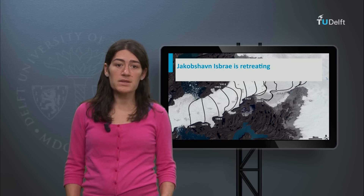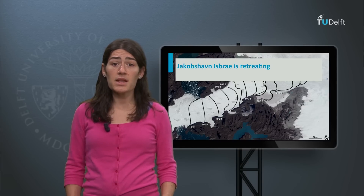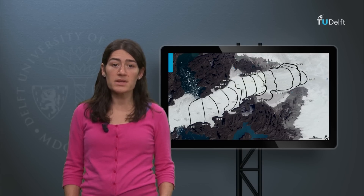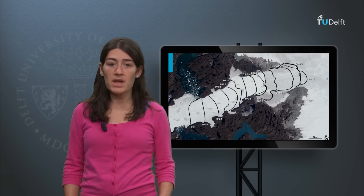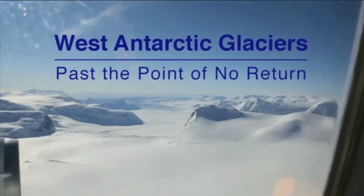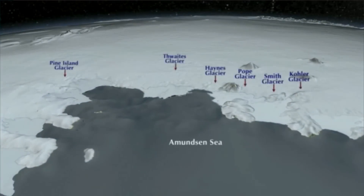Observational evidence and modelling studies indicate that increased ice discharge to the ocean will continue into the future. As an example, the fastest glacier in Greenland — Jakobshavn Isbræ — has been receding in recent years with high rates of iceberg production. The glaciers terminating in the Amundsen Sea of Antarctica have accelerated as well, and recent studies indicate that the mass loss is unstoppable.